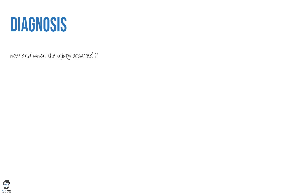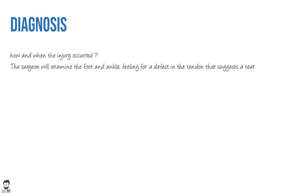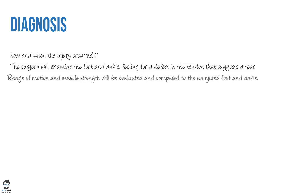To diagnose an Achilles tendon rupture, you start with the history — how and when the injury occurred. The doctor or surgeon will examine the foot and ankle, and usually there will be a palpable defect in the tendon. You feel for the tendon on the back of the heel, identify the defect, and correlate with the patient's history. Range of motion and muscle strength will be evaluated and compared to the uninjured side.